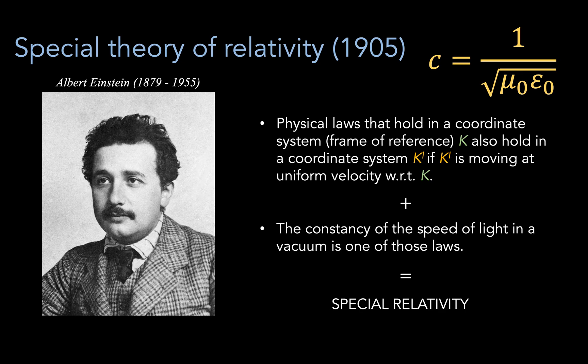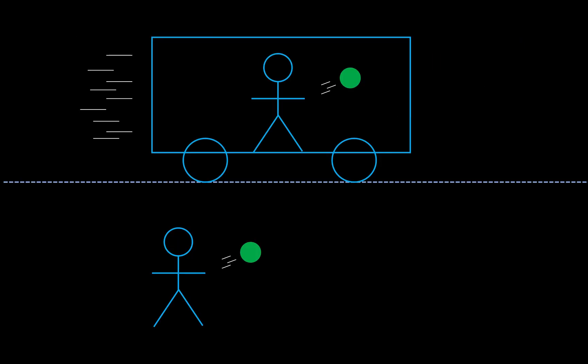Now, the constancy of the speed of light in a vacuum, independence of reference frame, is a pretty strange concept, especially when compared to everyday objects.